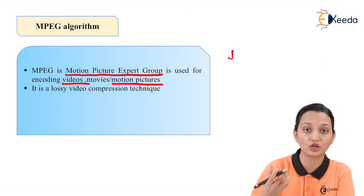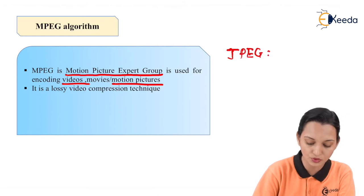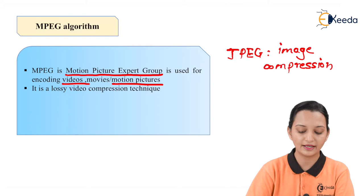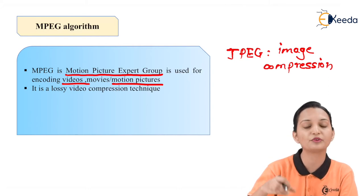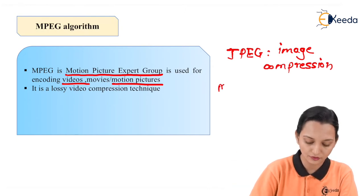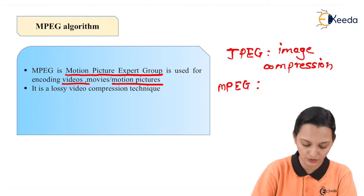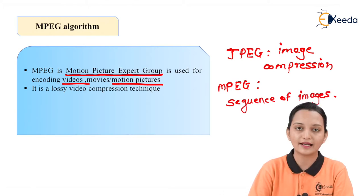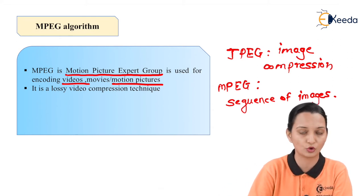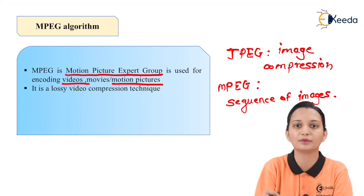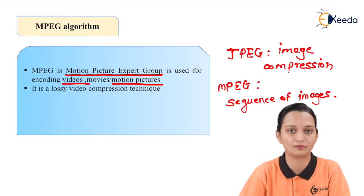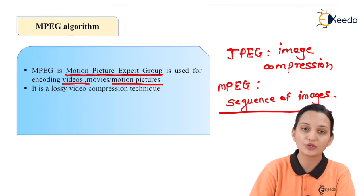What does it mean by video or motion picture? JPEG is a technique which we can use for image compression — this we have already studied. And its algorithm is simple, which we can apply on different parts of the image to get a better result. But though we have JPEG, we move to MPEG because MPEG will do the encoding of video — meaning a sequence of images at one time. A video or motion picture is nothing but a sequence of images, which can be stable or unstable, meaning the image can be taken from a single place or from different places. So the encoding of a sequence of images is the use of MPEG.